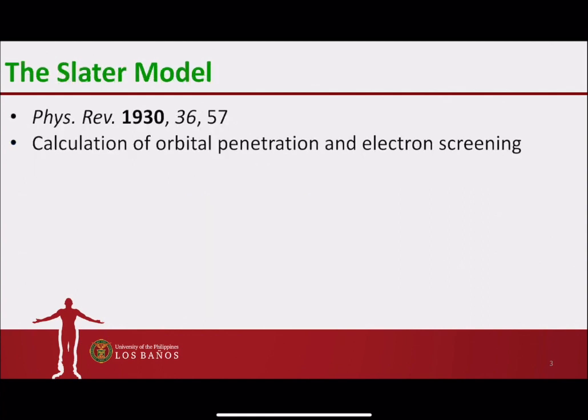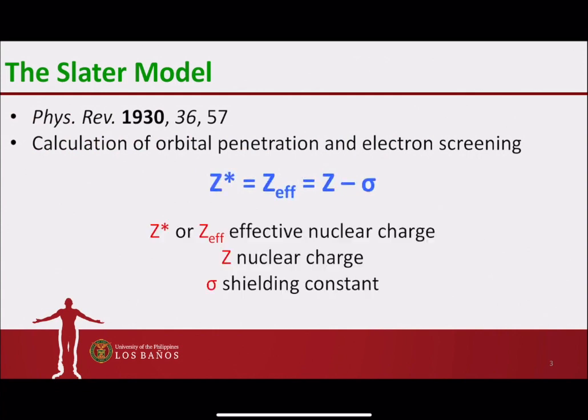Slater proposed a way to calculate and measure the orbital penetration and electron screening in polyelectronic atoms. In this given formula, we have Z* or ZEFF as the effective nuclear charge, and we can see that it depends on the nuclear charge Z, which is also the atomic number, and the shielding constant.